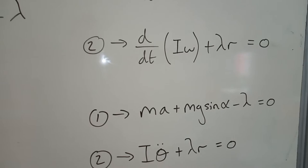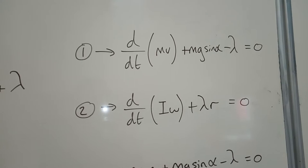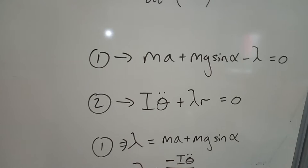For equation number two, because I've already used alpha for the angle, I can't use alpha for the angular acceleration. So I've just kept it as theta double dot. I'm not keen on doing that, but it's perfectly fine.